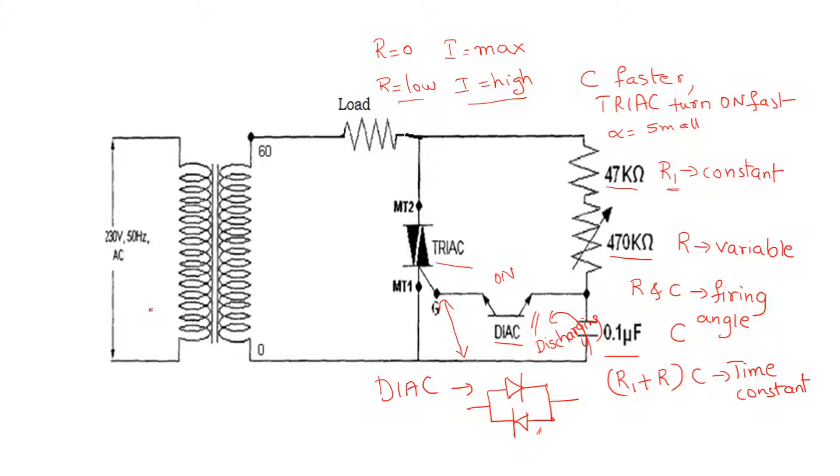Suppose our resistance value is high. Then the current is low, so it takes more time for the capacitor to get charged. The TRIAC will turn on late - the TRIAC takes more time to turn on.